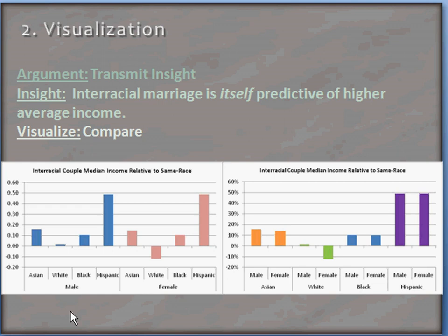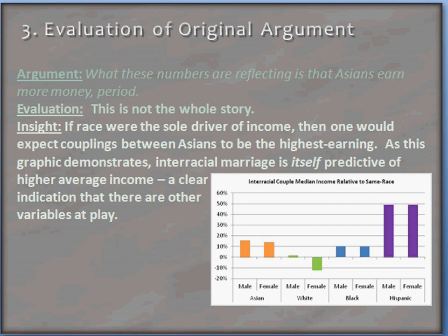Alternately, we can graph the information by race, where each race is denoted by a different color and males and females are denoted by separate bars. Comparing the two visualizations, both show the same general trend — that there is a boost to interracial marriage. However, the graph on the right gives some additional information much more clearly. One issue with Rimpel's argument is that if Asians are truly earning more money in general and this drove the result, we would expect Asian-Asian couples to have the highest earnings and interracial couplings to have a negative effect. However, they actually have a positive effect in general, and a much higher effect than for white couples. So this not only shows the overall benefit of interracial marriage, but highlights the issue we can take with Rimpel's argument.